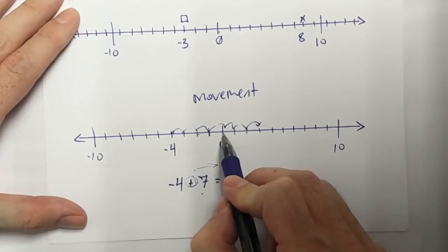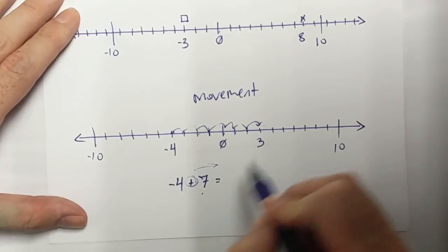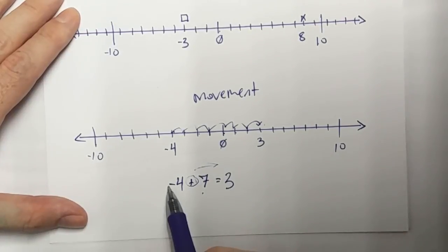Where am I? I'm from 0, 1, 2, 3, I am at 3. So negative 4, increase by 7, I am now at 3.